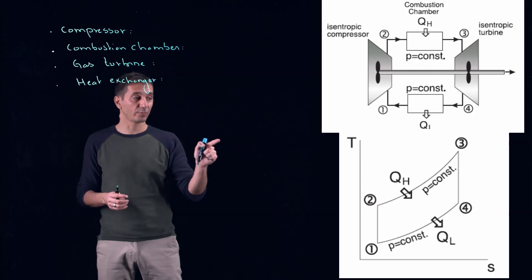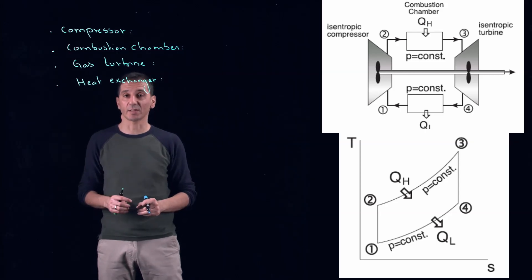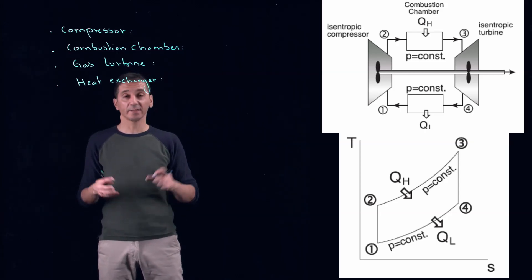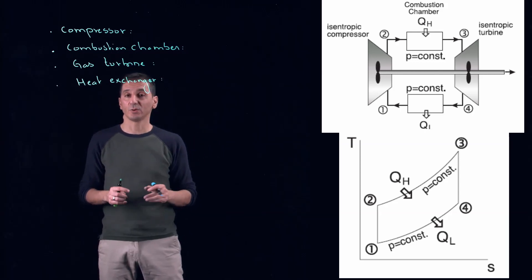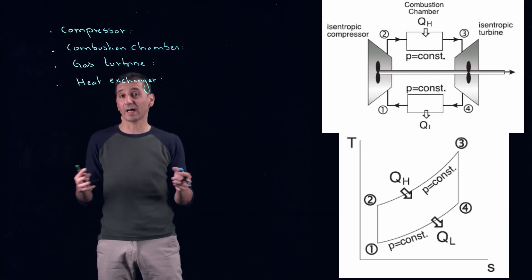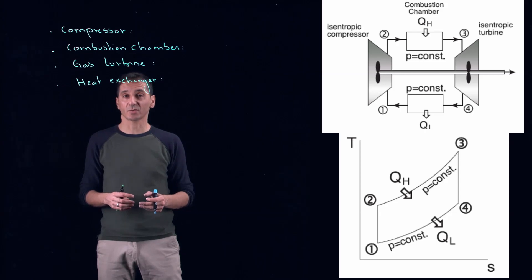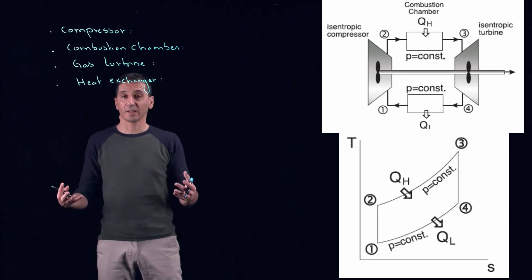And this is from three to four isentropic process, ideally. And then we close the loop from four to one using a heat exchanger. And ideally, the process also will be isobaric.